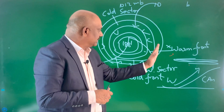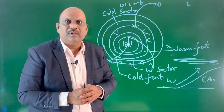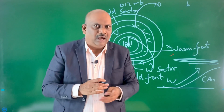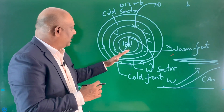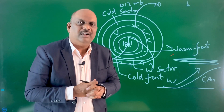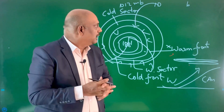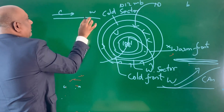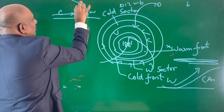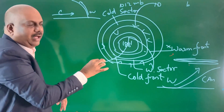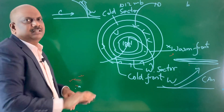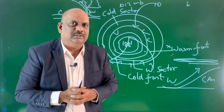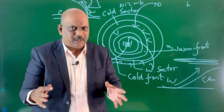Once the warm front passes, the person enters the warm sector — temperatures rise, humidity increases, and skies become clear. After that, they come under the influence of the cold front. The cold front is associated with turbulent weather because the cold air mass invades the region of the warm air mass and pushes it upward sharply. The warm air gushes up fast — note the steeper slope compared to a warm front. This results in the formation of cumulonimbus clouds, associated with lightning and thunder, bringing heavy showers of short duration.